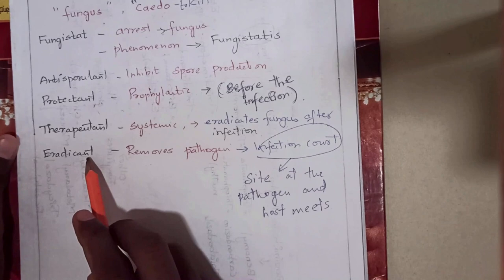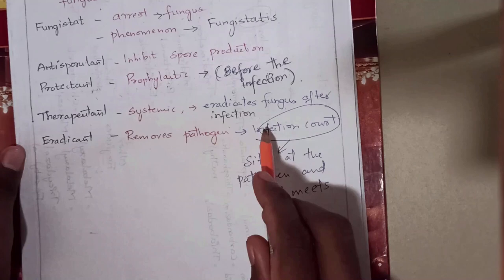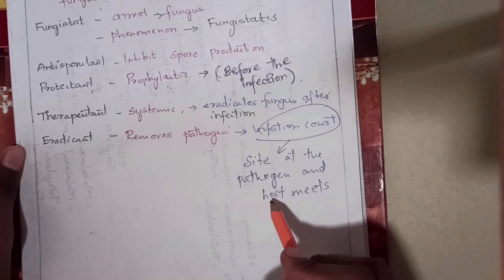Eradicant fungicide removes the pathogen at the infection court. The infection court is the site at which the pathogen and the host meet for the infection.